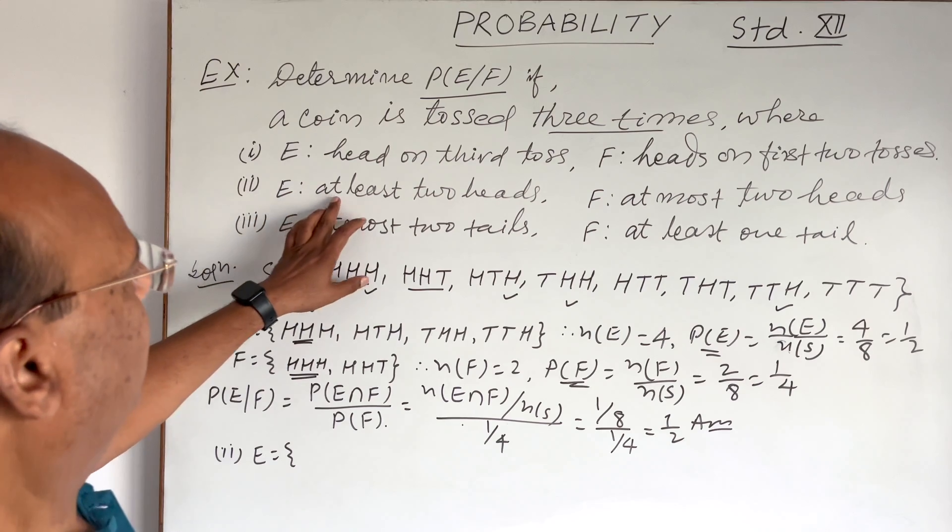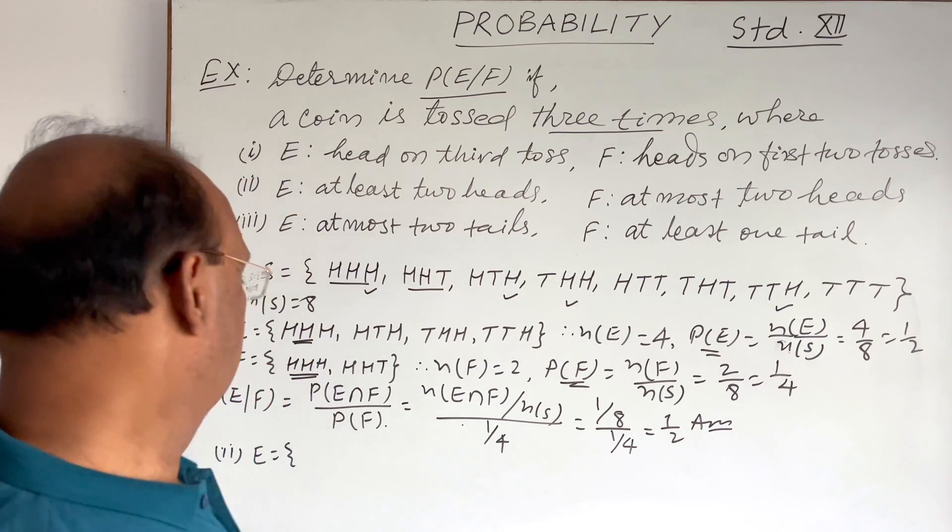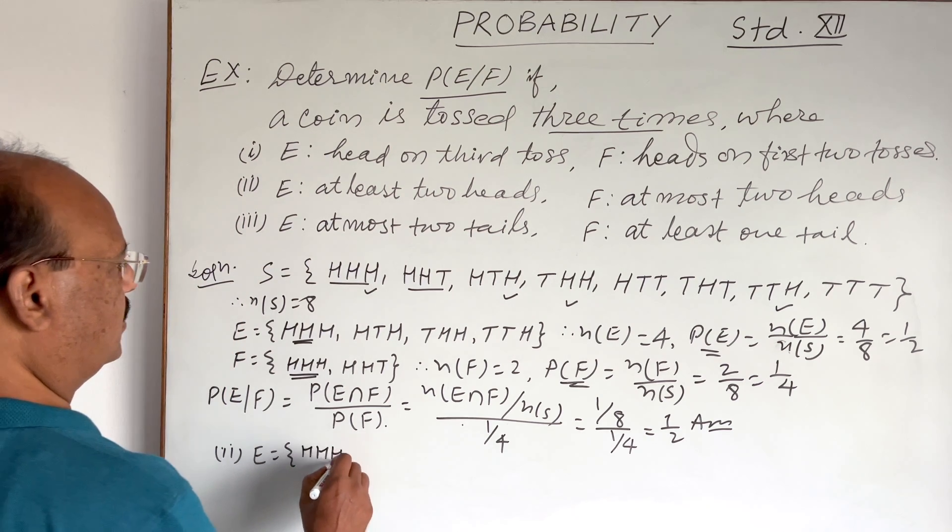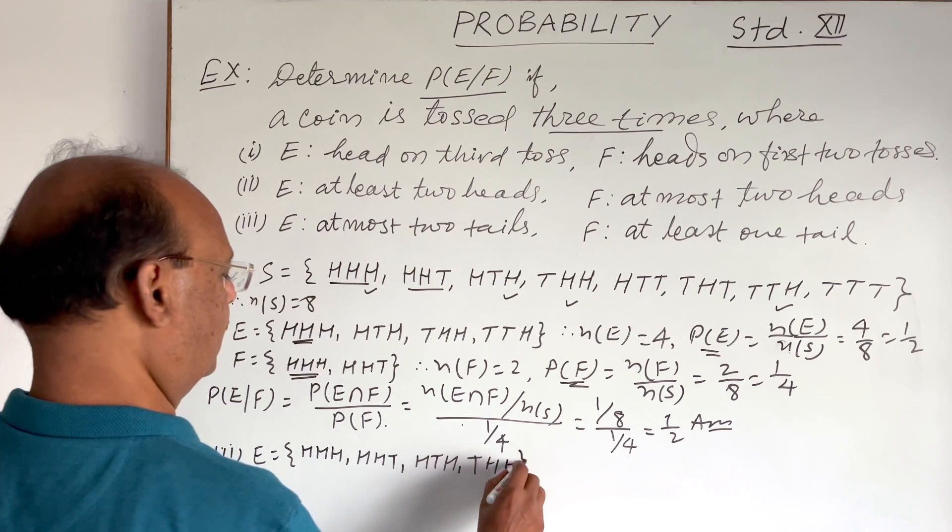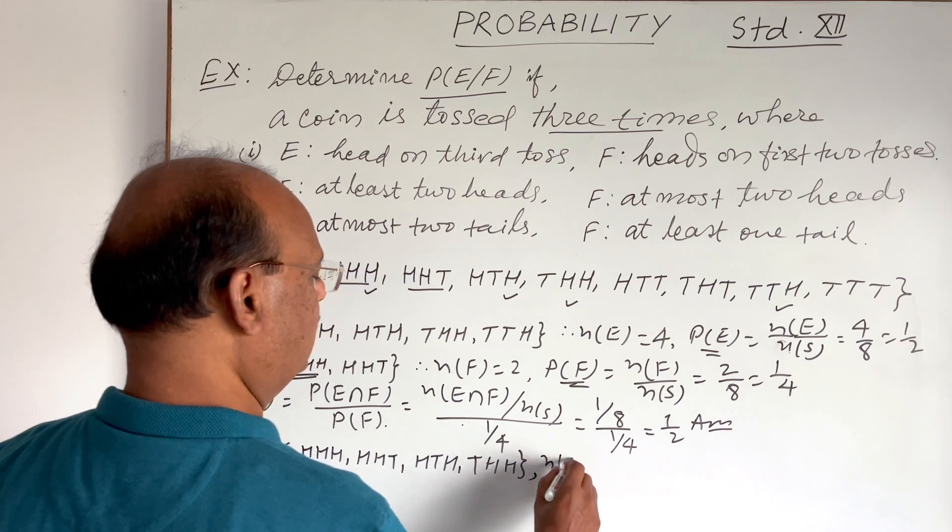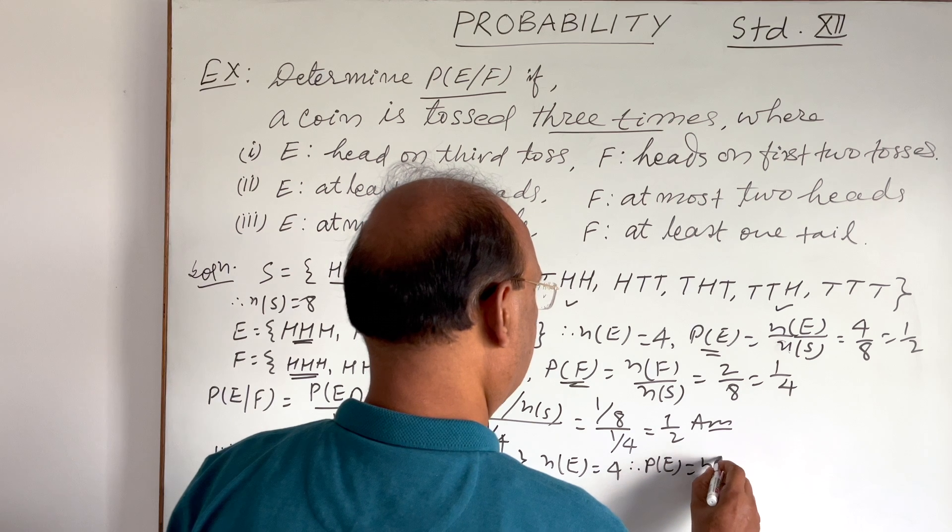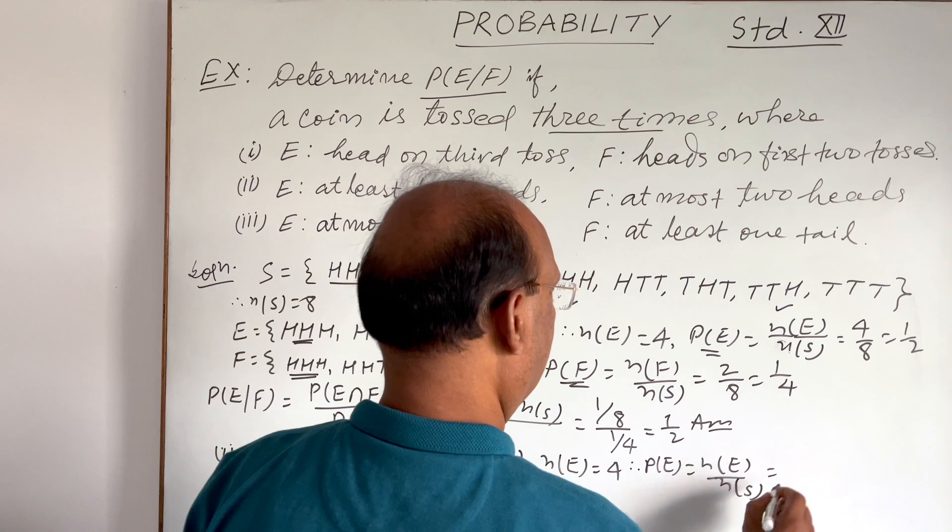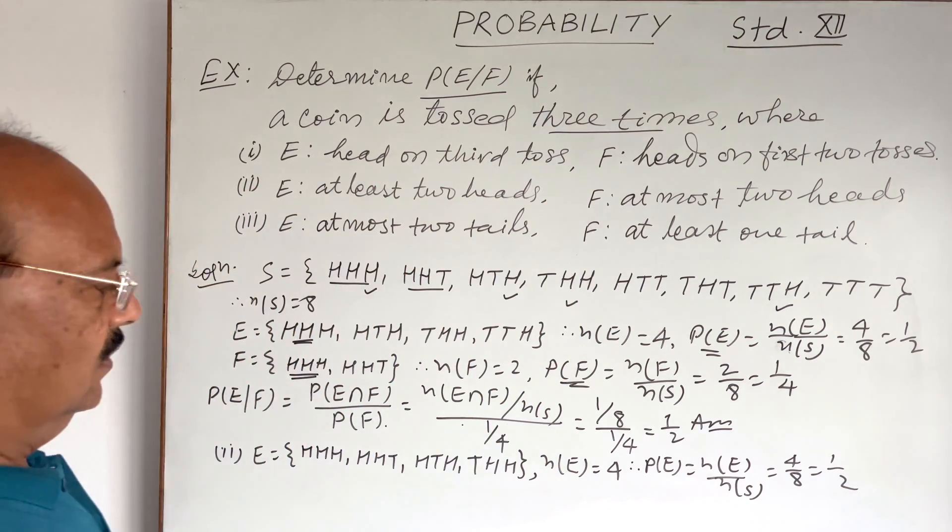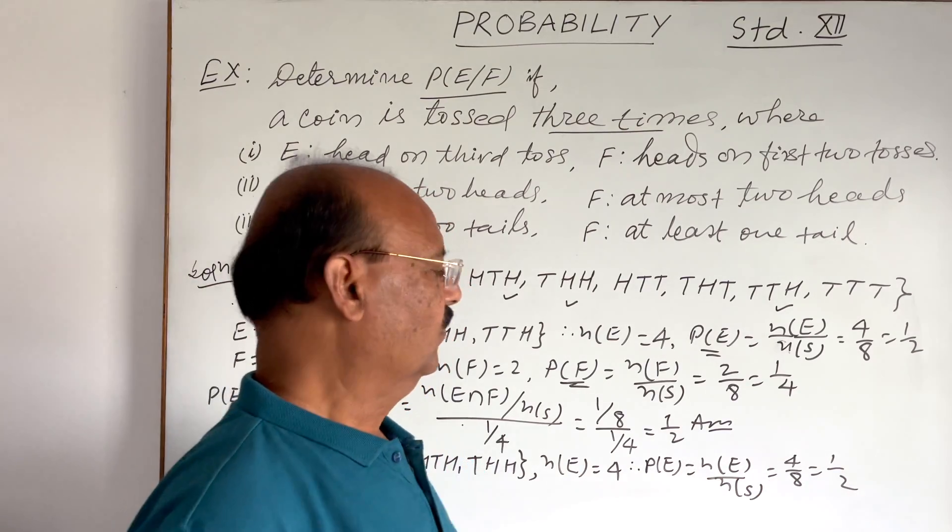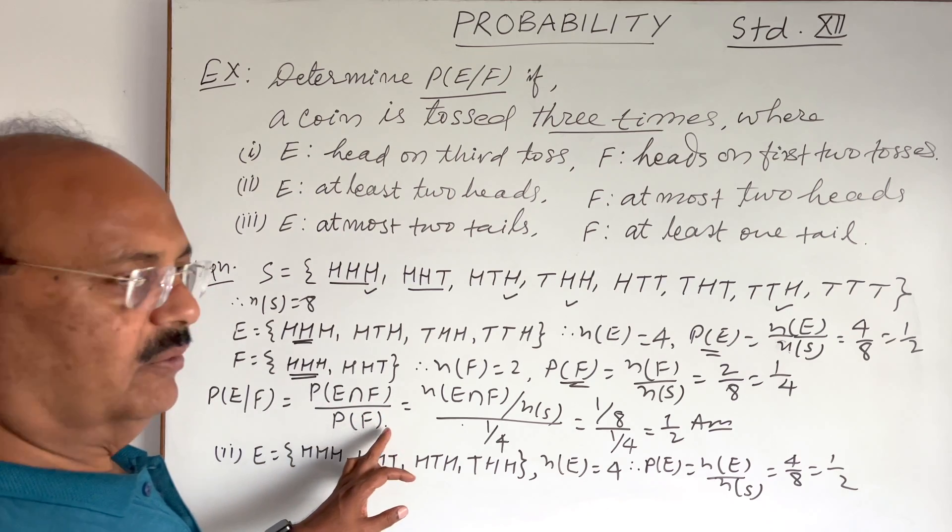E consists of the elements having at least two heads, maybe more than two, means three heads, but at least two heads, not less than two heads. So this will be HHH, HHT, HTH, and THH. Here in this case, N(E) is equal to four. So therefore, probability of E here is equal to N(E) divided by N(S), and this is equal to four by eight, which is equal to half. Although we do not need this value here. In the formula, we will not require probability of E. We will require only probability of E intersection F and probability of F.